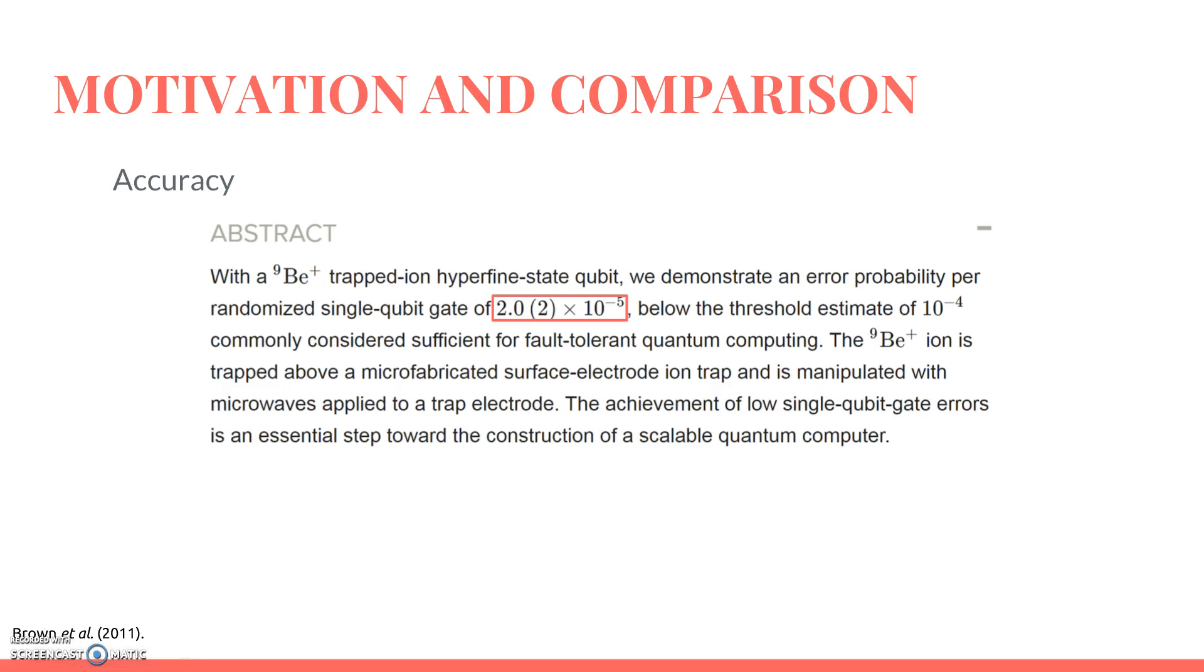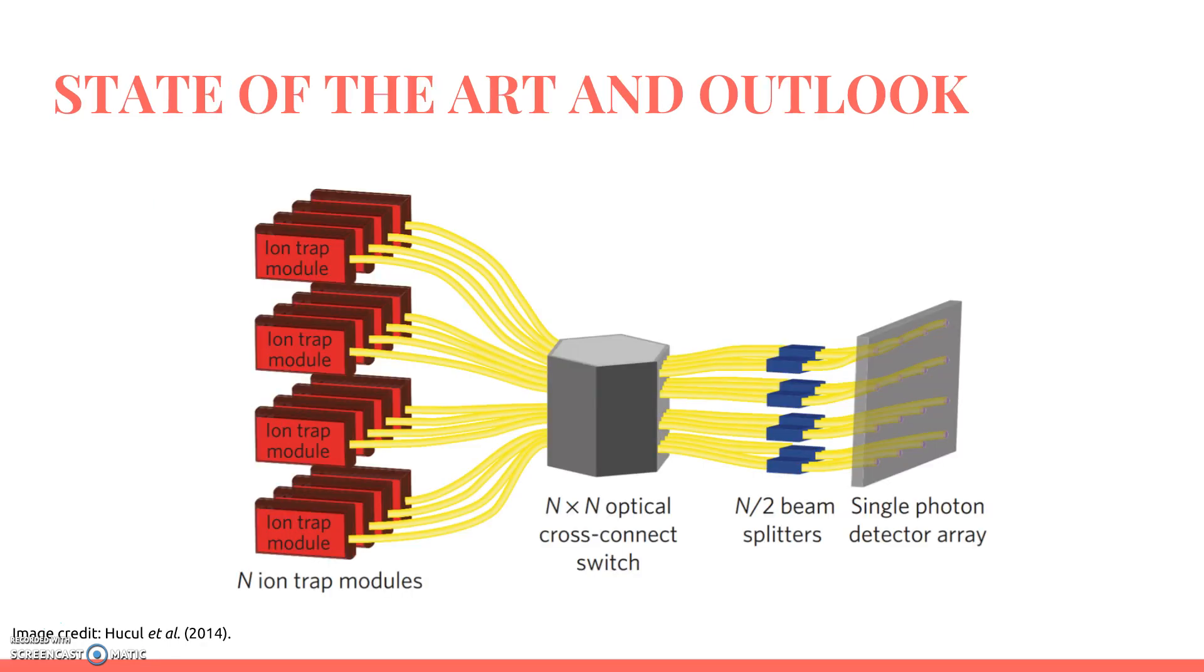The present challenge for trapped ion quantum computing is to find a method by which to coherently manipulate large networks of trapped ions. Already, the field is seeing advances. For example, in November of 2014, Hucul et al. demonstrated a first step in a modular approach to scaling entanglement via quantum buses on three trapped ion qubits stored in two distinct modules. The researchers used phonon interactions to achieve entanglement between ions within a module, and photon interactions to achieve remote entanglement between modules.